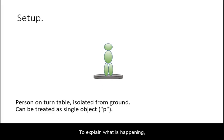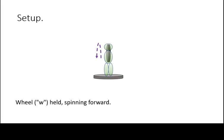To explain what is happening, we are going to treat the turntable and the person as a single object. We are going to take the view where the wheel is in front of the person spinning forward, and we are looking at the system from behind.